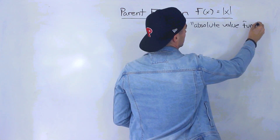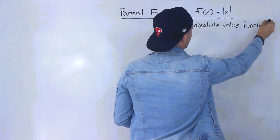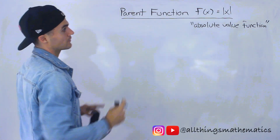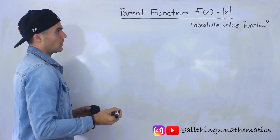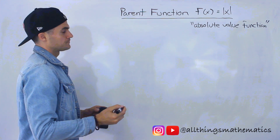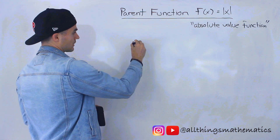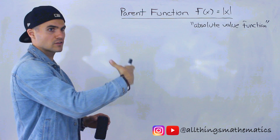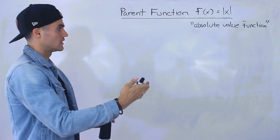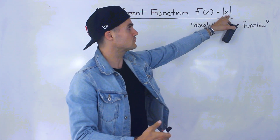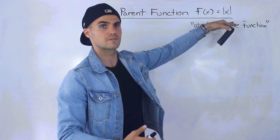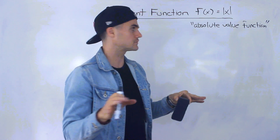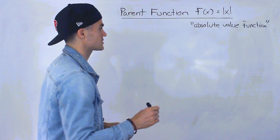You may have ran into absolute values before, maybe not. They're basically characterized by those two vertical lines. But what absolute values do, as a simple explanation, is that they make sure that everything is positive. So any negative value inside an absolute value will turn into a positive. Any positive value, it will just keep it as that positive value. And then if there's a zero there, it's just going to equal zero.